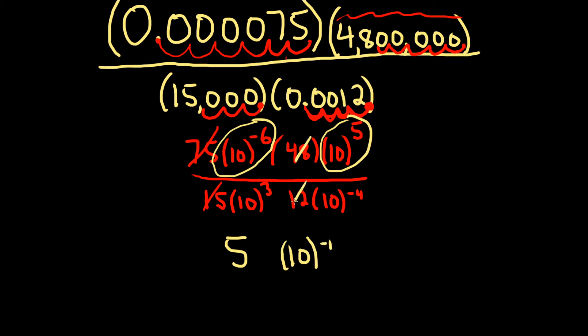And this 48 over 12, that's going to give us a 4. Okay, now we'll deal with the bottom. 10 cubed times 10 to the negative 4, we'll add the exponents, that's 10 to the negative 1.